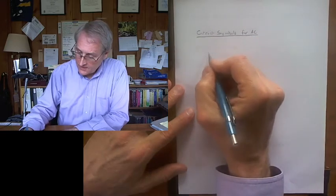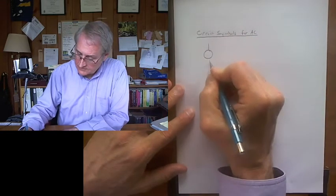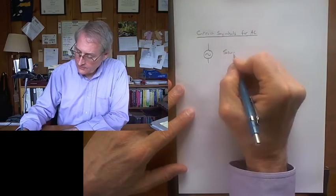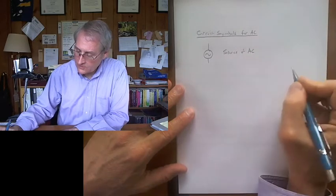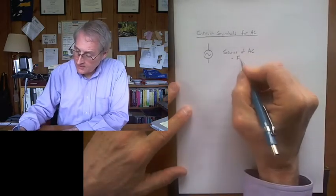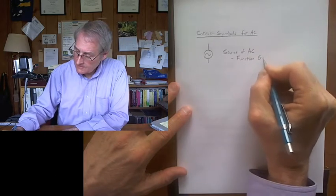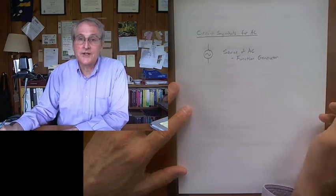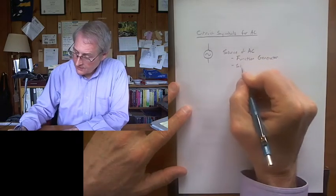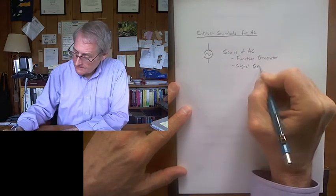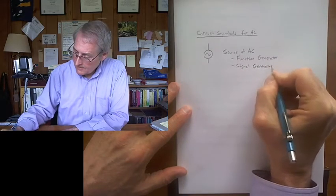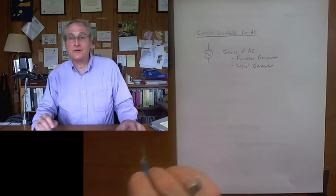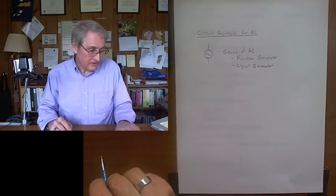The first one is a source of alternating current. It has a little wiggle sine wave in it, and this is the source of AC, alternating current. It might be a function generator - the device we're going to use is in fact a function generator. It might be just a signal generator. It's enough for our purposes, and I'll leave it to you to read the handout to figure out the difference between a function generator and a signal generator.